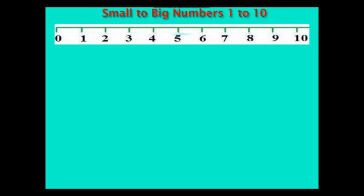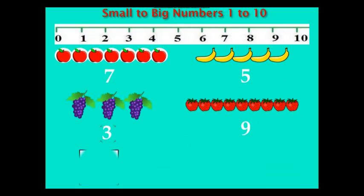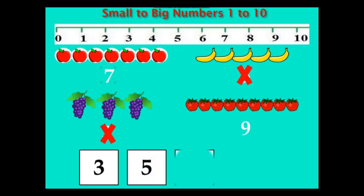Let me give you another example. 7, 5, 3, 9. 3 is the smallest number here. The next small number after 3 is 5. The next small number after 5 is 7. And 9 is the biggest number here.